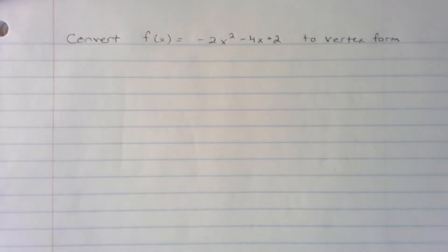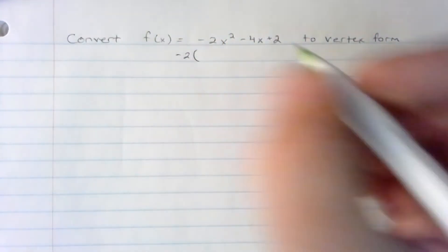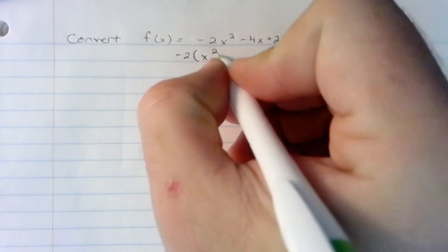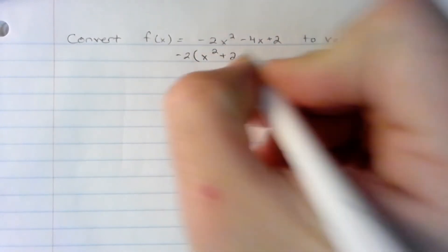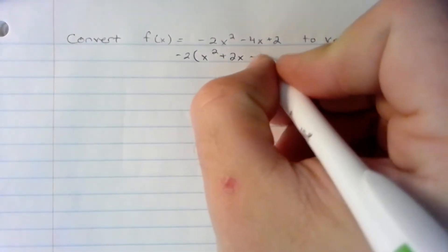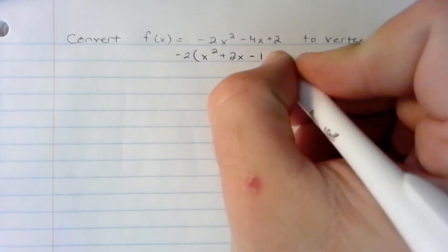And what's left is x squared plus 2x. And then what we have left is a quadratic, which we're going to do that by a process called completing the square.